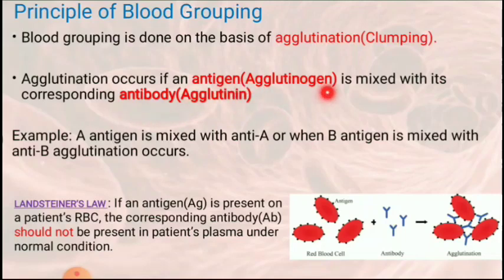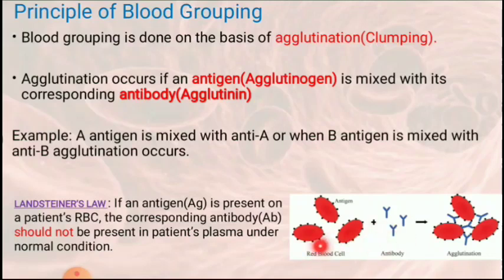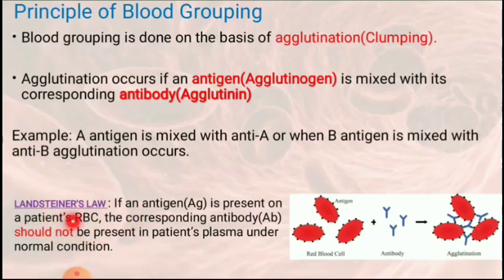This agglutination or clotting occurs when a particular antigen is mixed with its corresponding antibody. Antigen is also known as agglutinogen, and antibody is also known as agglutinin. When an antigen meets its corresponding antibody, there is an antigen-antibody reaction known as agglutination, causing clumping. Based on this, Karl Landsteiner gave a law known as Landsteiner's Law, which states that if a particular antigen is present on a patient's RBC, the corresponding antibody should not be present in the patient's plasma.